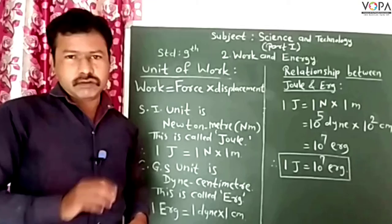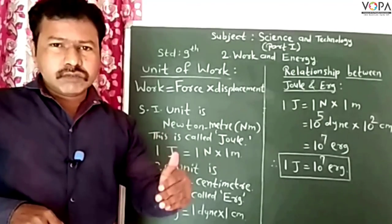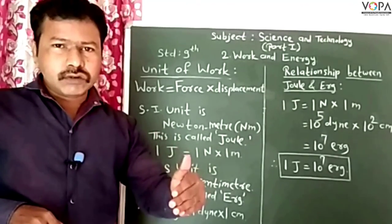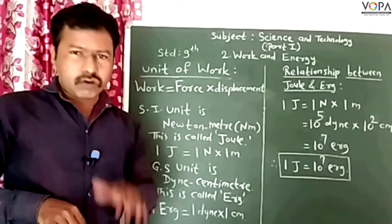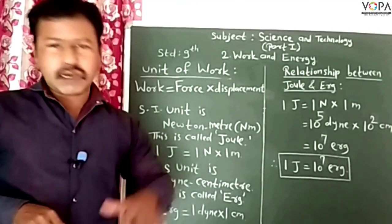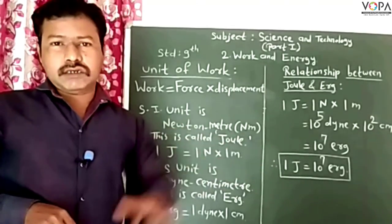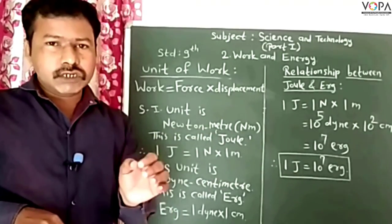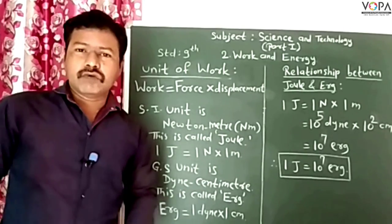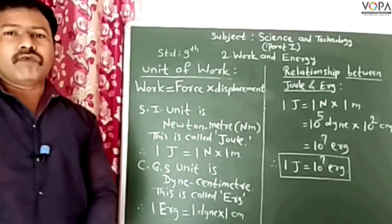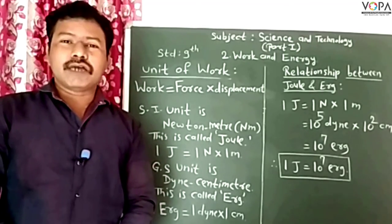This is the relationship between Joule and erg. In examinations, it may be asked: 'What is the relationship between Joule and erg?', or 'State the relationship between Joule and erg', or as a fill-in-the-blank: '1 Joule is equal to ___ erg.' The answer is: 1 Joule is equal to 10 raise to 7 erg. In this way we have seen the unit of work and the relationship between Joule and erg.